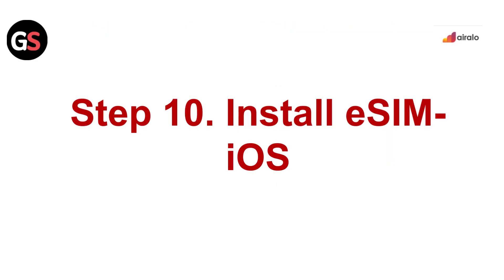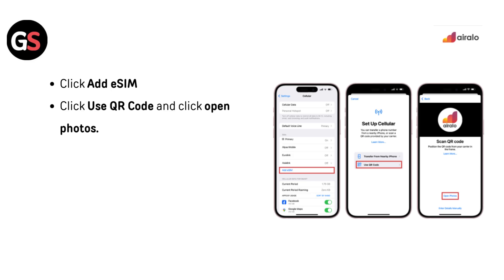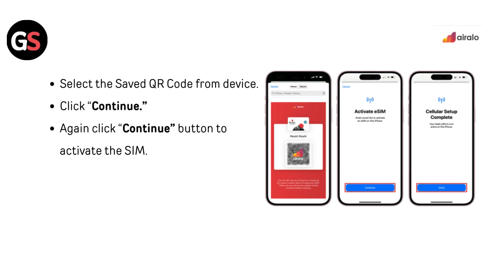Step 10 — Install eSIM on iOS, Method 1 Using QR Code: In the AirLo app, select QR code as the installation method. Click the Share button and save the QR code by clicking Save Image. Go to Settings, then Cellular or Mobile, and click Add eSIM. Click Use QR Code, click Open Photos, select the saved QR code from your device, and click Continue twice to activate the SIM.